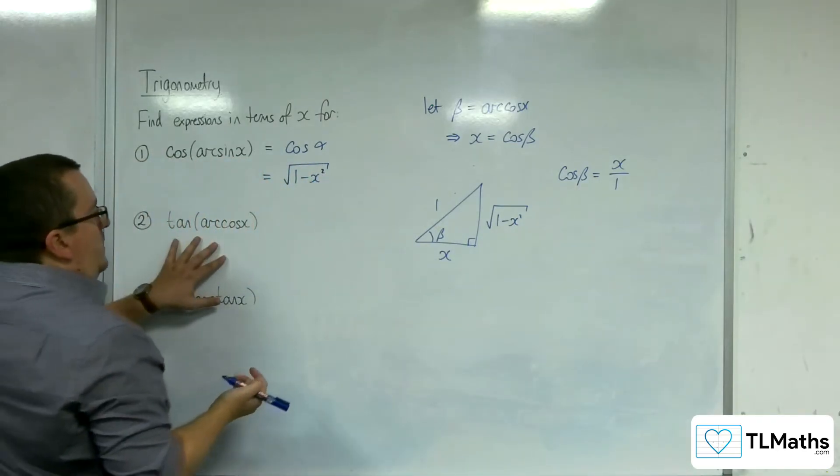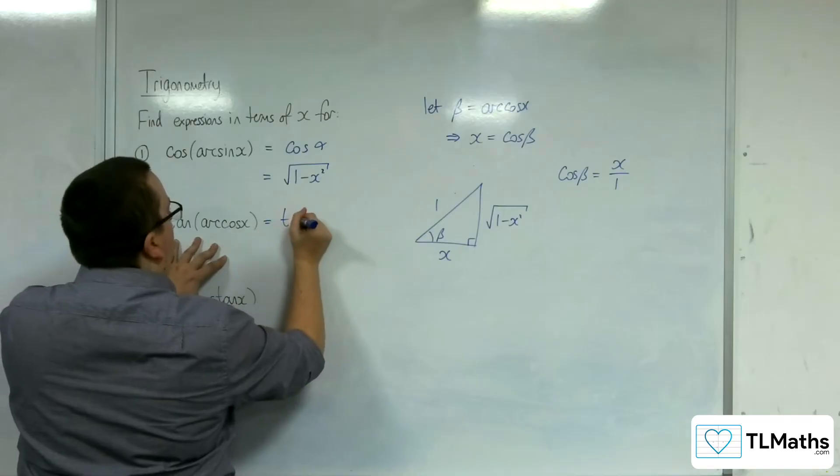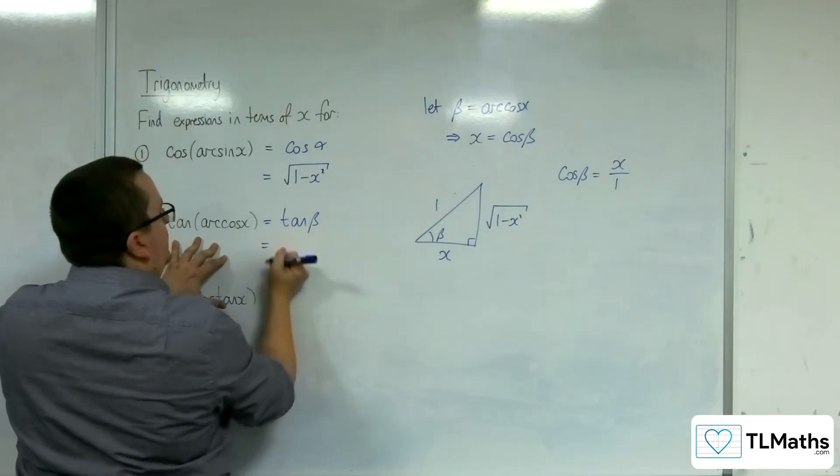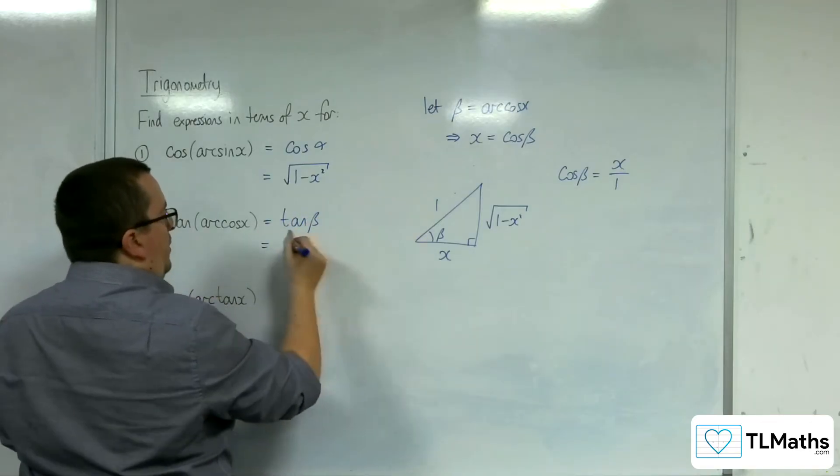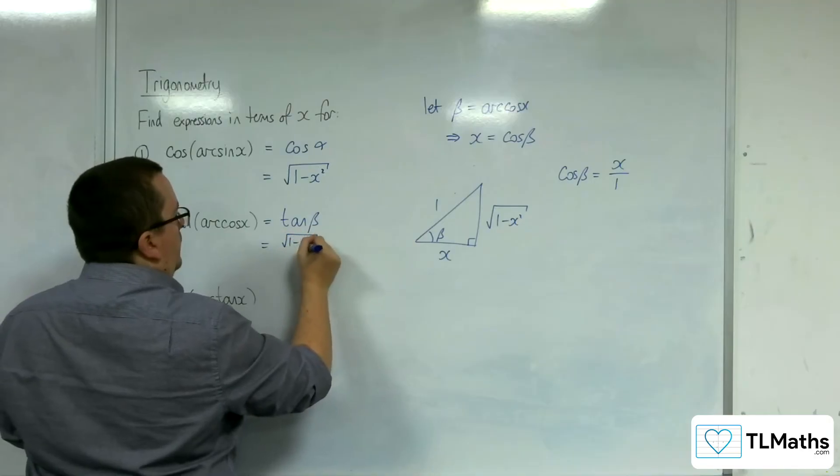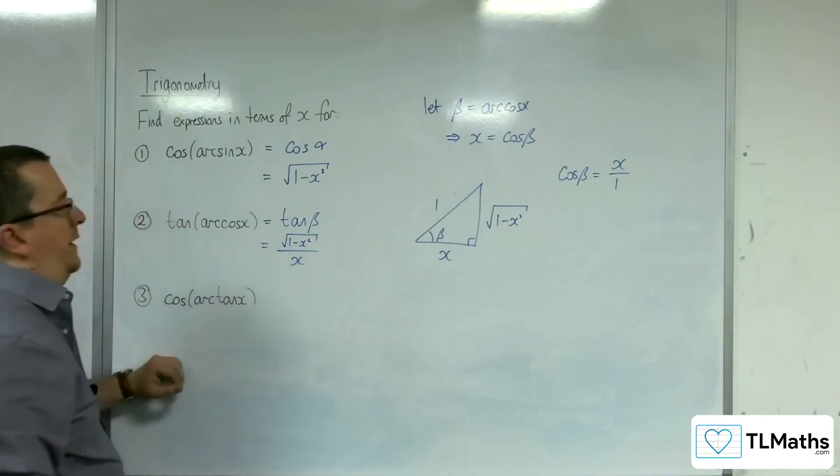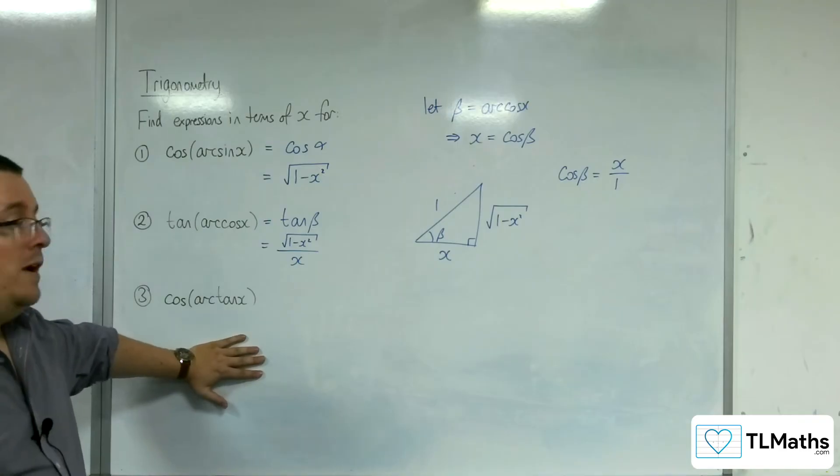So if I'm looking at tan of arc cosine x, this is tan of beta, which is equal to the opposite over the adjacent. So that's the square root of 1 minus x squared over x.